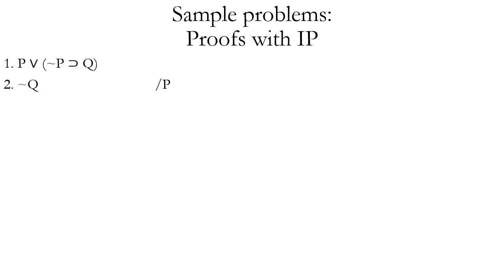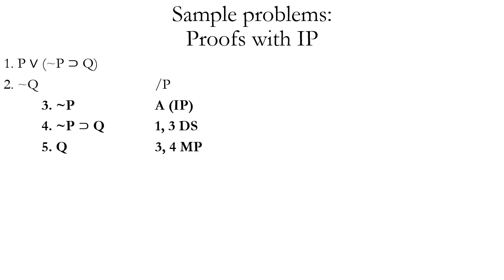Let's look at another sample problem. We're trying to prove P from those two premises. So what should we assume with indirect proof? We should assume tilde P and justify that via assumption indirect proof. Now we want to look at our premises and assumption and see if we can get any ideas of how to make a contradiction. If you look at the form of lines one and three, they fit the pattern of disjunctive syllogism. When we use disjunctive syllogism on lines one and three, we can prove that the other disjunct of the first line — tilde P horseshoe Q — must be true.